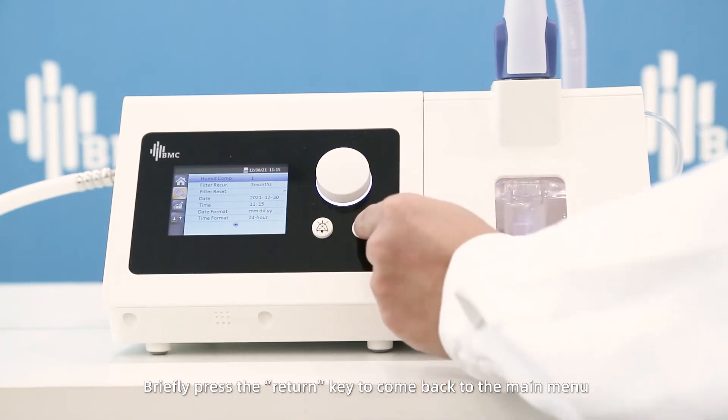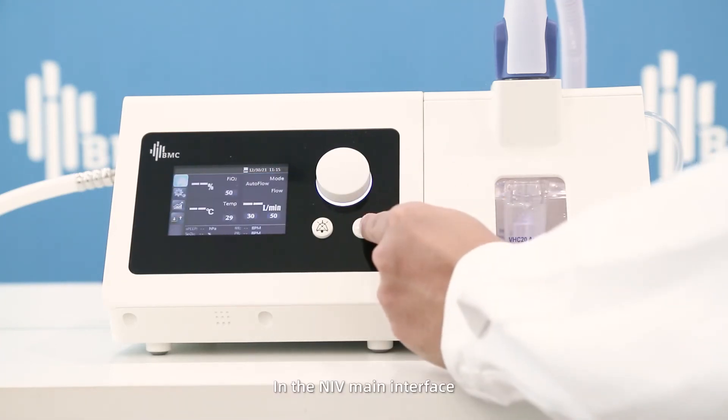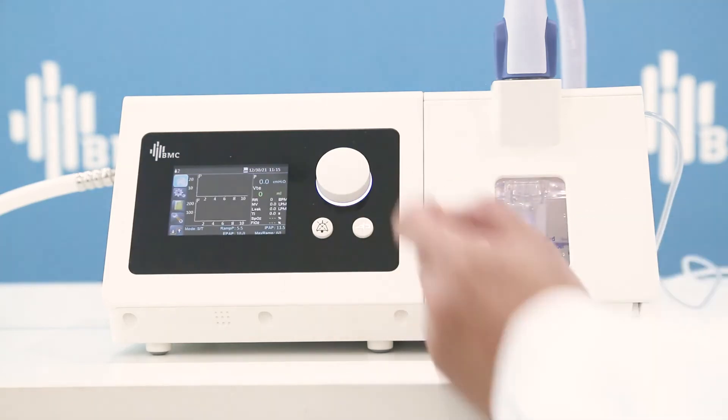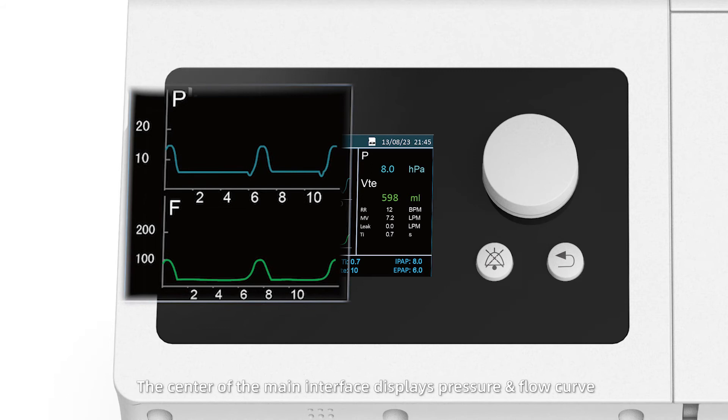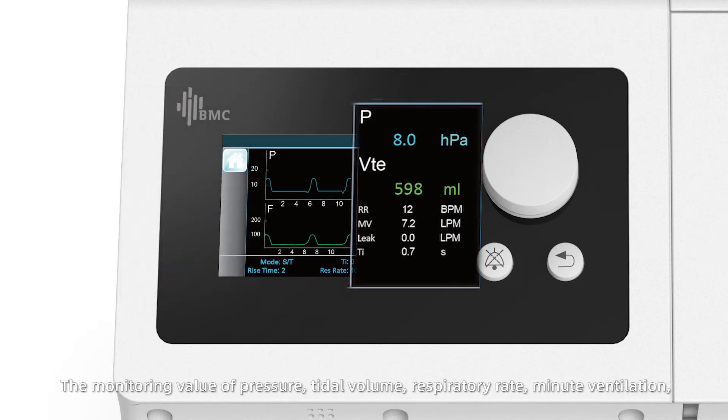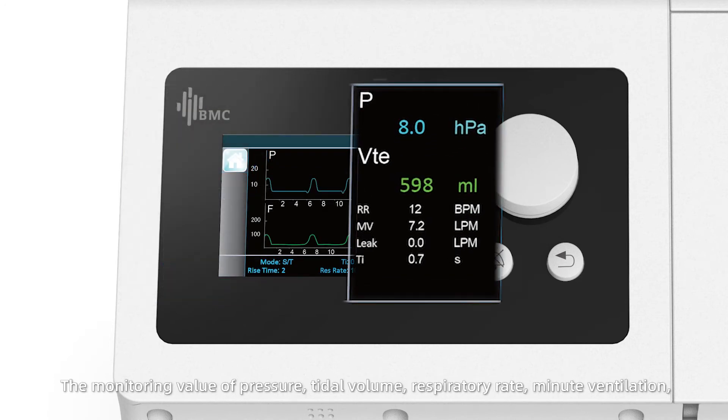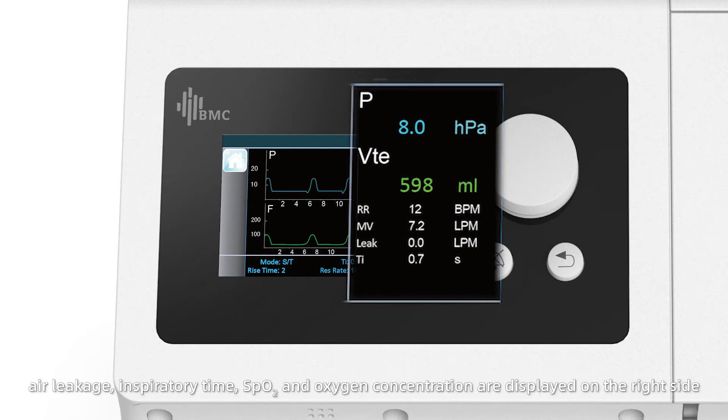In the NIV main interface, the center displays pressure and flow curve. The monitoring values of pressure, tidal volume, respiratory rate, minute ventilation, and air leakage are shown.